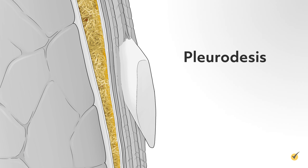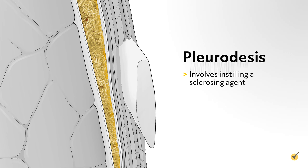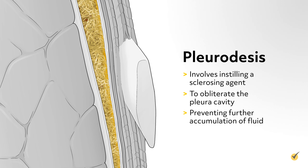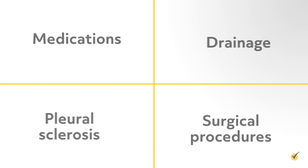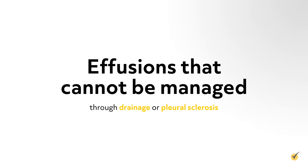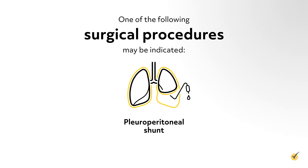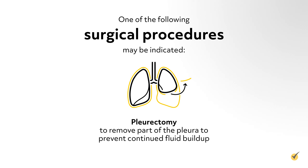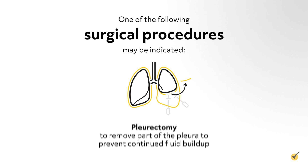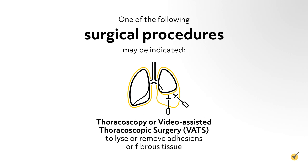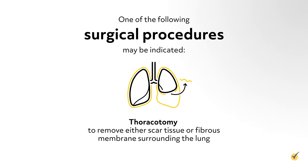A procedure called pleurodesis involves instilling a sclerosing agent to obliterate the pleural cavity, preventing further accumulation of fluid. In effusions that cannot be managed through drainage or pleural sclerosis, one of the following surgical procedures may be indicated: placement of a pleuroperitoneal shunt; pleurectomy to remove part of the pleura to prevent continued fluid buildup; thoracoscopy or video-assisted thoracoscopic surgery, known as VATS, to lyse or remove adhesions or fibrous tissue; or a thoracotomy to remove either scar tissue or fibrous membrane surrounding the lung.